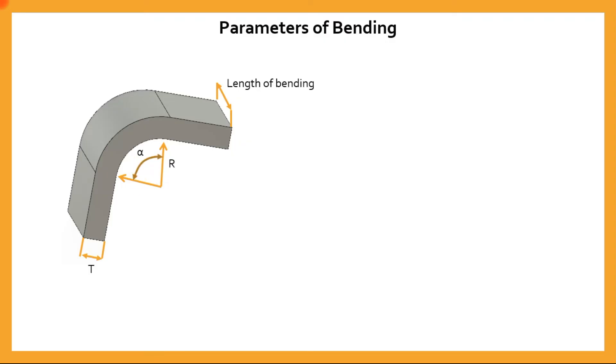And alpha signifies the angle of bend - how much of an angle has the sheet metal been bent with respect to the base reference. So these four are the major parameters of bending: the length of bend, the thickness of the sheet metal, the angle of bend, and the radius of bend.